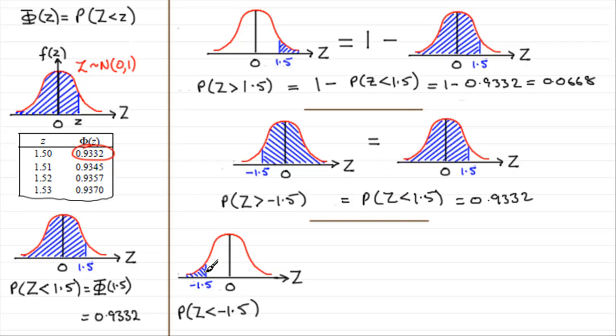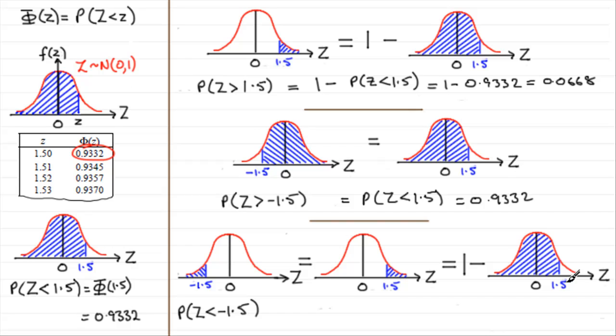Well, what we do is mirror this to the other side so we get something like this. And we now know how to work out probabilities of being greater than a value. We did it up here. It's just going to be 1 minus the probability of being less than the positive value of 1.5.